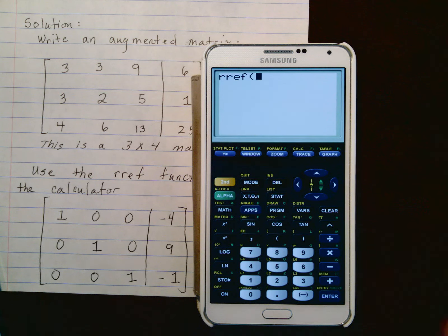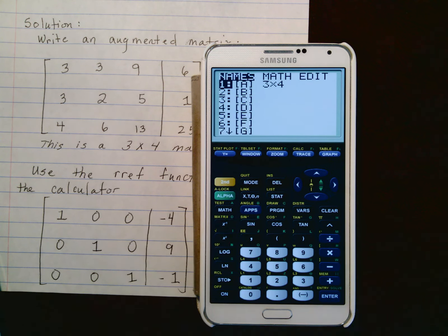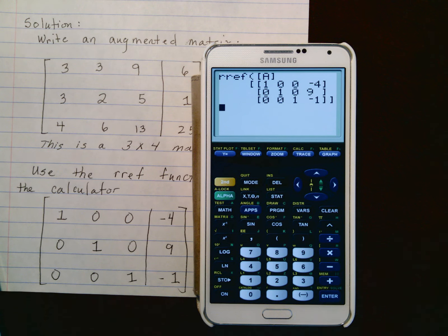Now you have to tell the calculator what name of the matrix that you want to perform this function on. We're going to hit 2nd, matrix, and we'll leave it on names. I put this matrix in A, so I'm going to select A. There it is, hit enter, and there we have it.